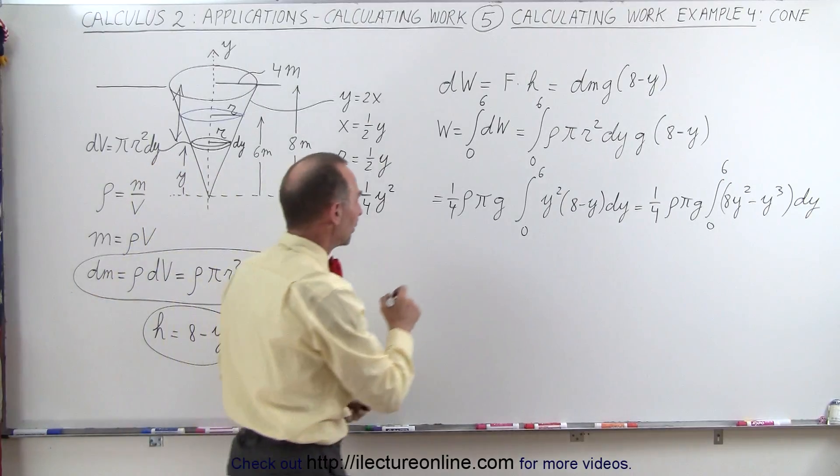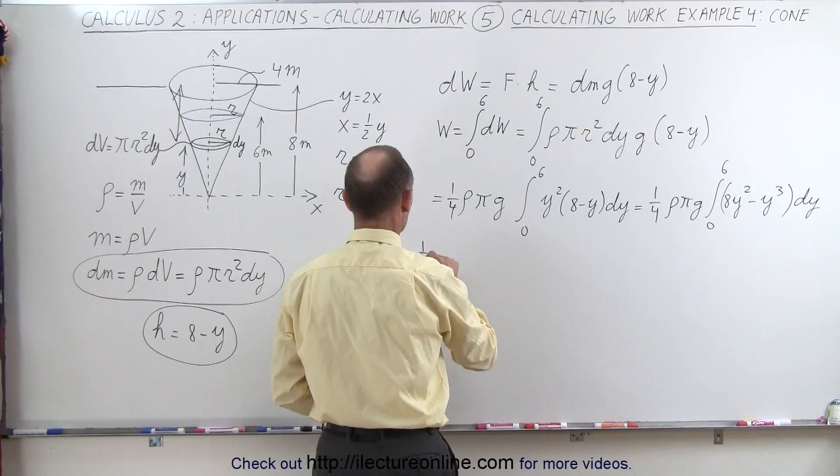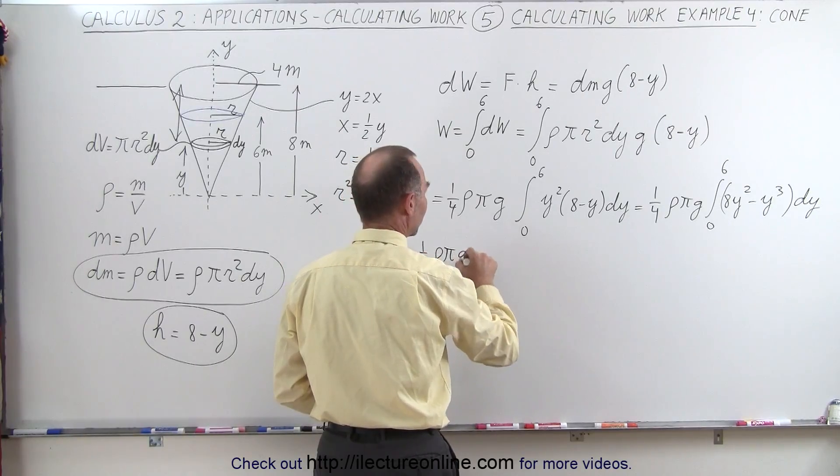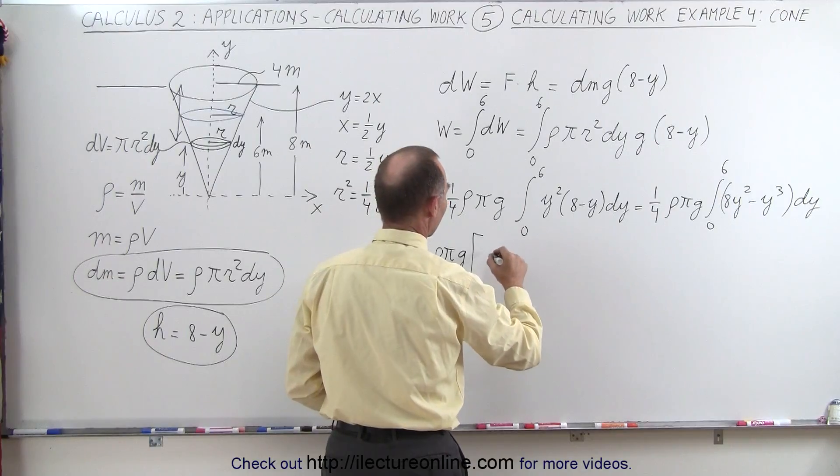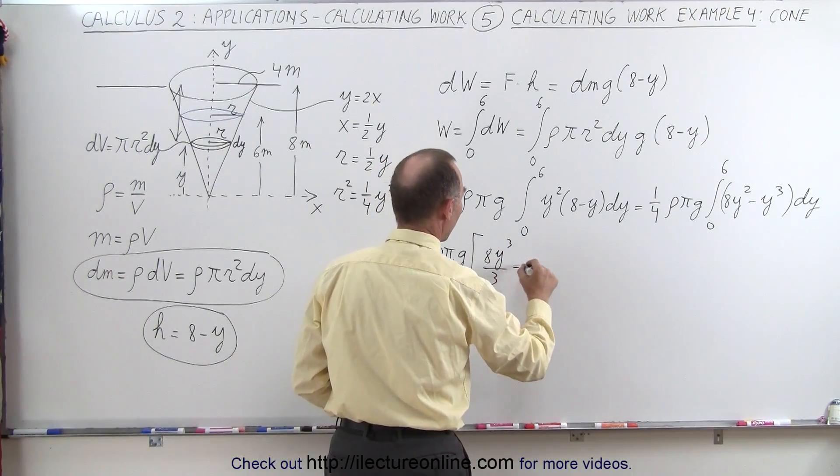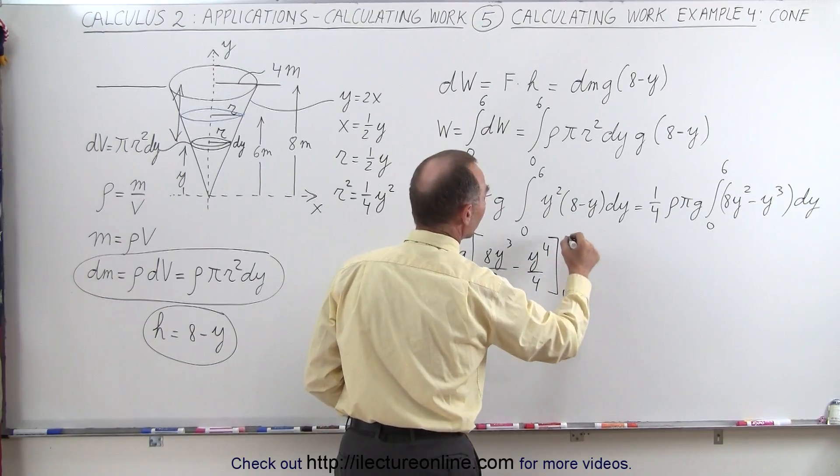All right, so let's go ahead and integrate that. So this is equal to one quarter, the density times pi times g times we have 8y cubed over 3 minus y to the 4th over 4, evaluated from 0 to 6.